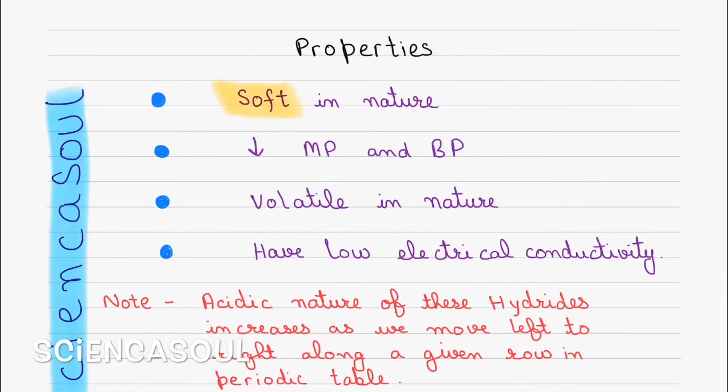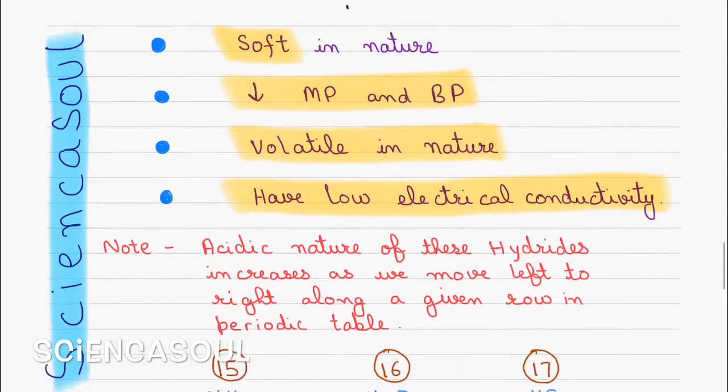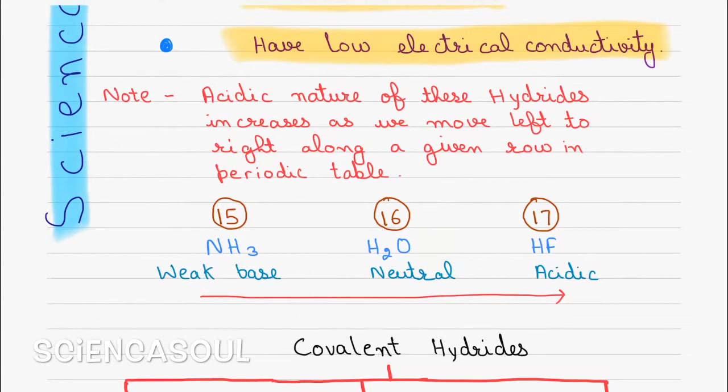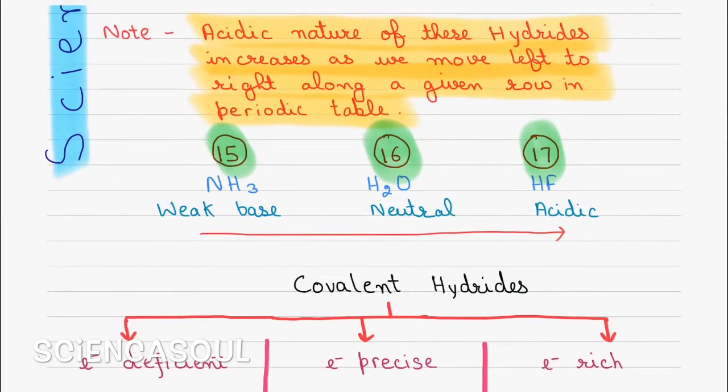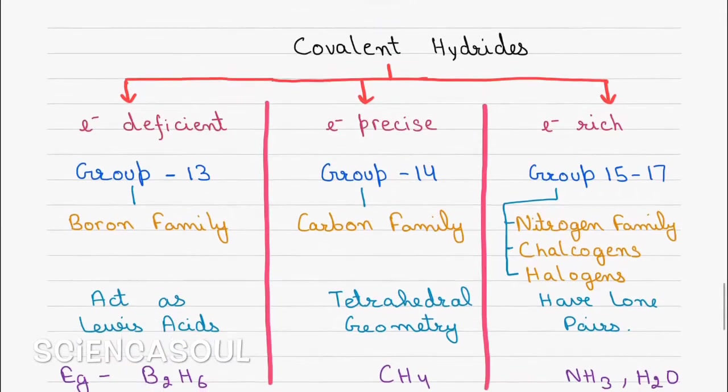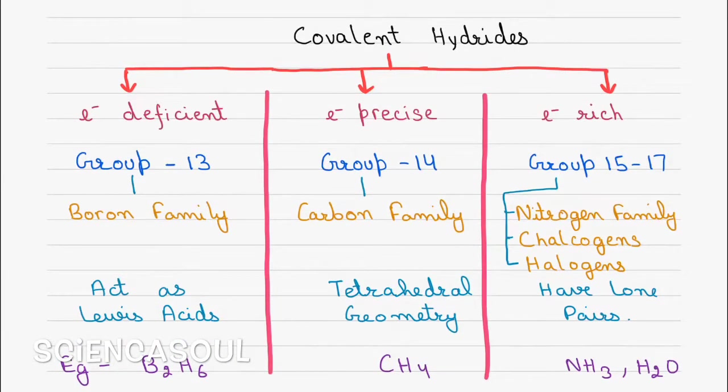Now we will see properties of covalent hydrides. They are soft in nature. They have low melting and boiling points. They are volatile in nature. They have low electrical conductivity. One note is given: acidic nature of these hydrides increases as we move left to right along a given row in periodic table. Now from group 15, 16, and 17, we will move from 15 to 17, in which NH3 of group 15 is weak base, while H2O is neutral, and HF is acidic.